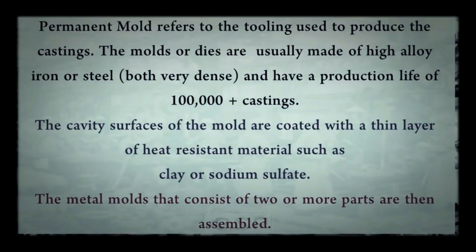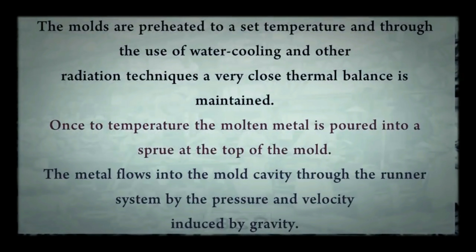Moving on to permanent mold casting. Permanent mold refers to the tooling used to produce the castings. The molds or dies are usually made of high alloy iron or steel and have a production life of 100,000 plus castings. The cavity surfaces of the mold are coated with a thin layer of heat resistant material such as clay or sodium sulfate. The metal molds that consist of two or more parts are then assembled. The molds are preheated to a set temperature and through the use of water cooling and other radiation techniques, a very close thermal balance is maintained. Once at temperature, the molten metal is poured into a sprue at the top of the mold.